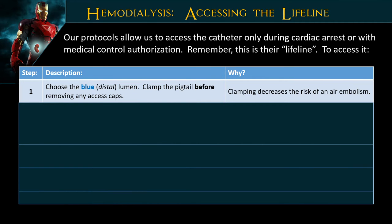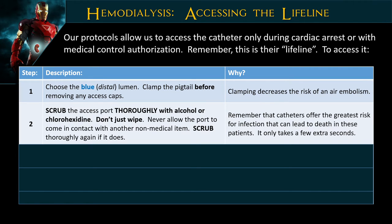In our protocols, this is the only catheter we can actually access in the field if we're in a peri-arrest or arrest state. We always want to choose the blue lumen — blue goes to the body, red means stop. We want to clamp the pigtail first, make sure there's no air embolus, and give it a good scrub. In the field the process may not be perfect, but we need to make sure we really thoroughly clean these catheters — scrub the access port with an alcohol prep — because these catheters carry a great risk of infection, which can cause death.